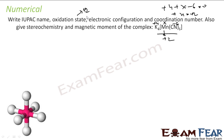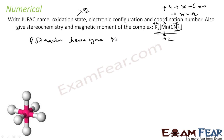Now I write the IUPAC name. Potassium is the cation, so I write potassium first. Then the anion — the whole complex is the anion. For the anion: ligand first, CN is cyano, six of them gives hexacyano. Then manganese — since it is a negative ion it will be manganate. The charge on manganese is plus 2, so the name is potassium hexacyanomanganate(II).